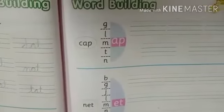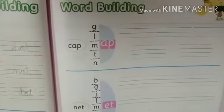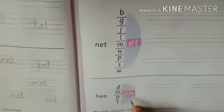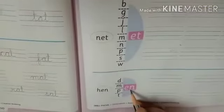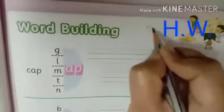And last is S — S, A, T — sat. Now page number 51 is the same type as page 50. In this page we had 'ot' and 'at' word families; similarly here we need to keep 'et' and change the first letters. Okay students, this is your homework.